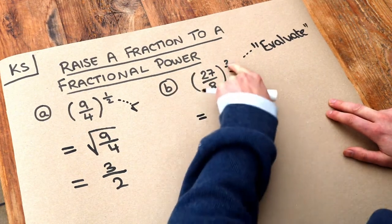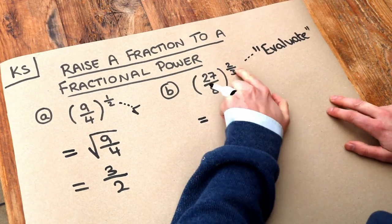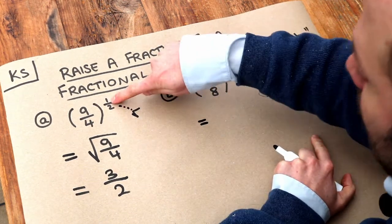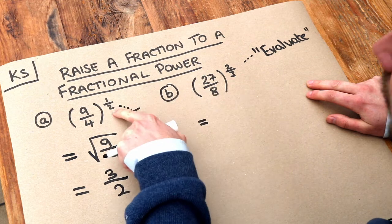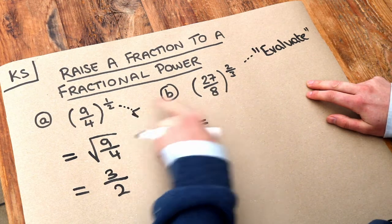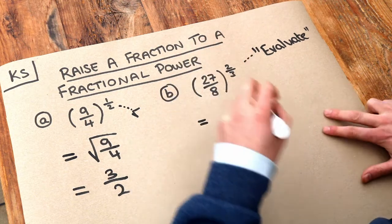So we've got this fractional power. Now this one's a bit more complicated because the numerator is not 1 like in this particular fractional power. But we always deal with the denominator first. So if that denominator was 2, we square root it. If the denominator is 3, we cube root first.